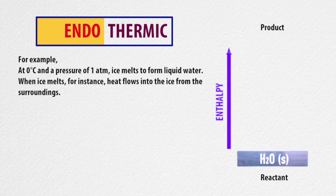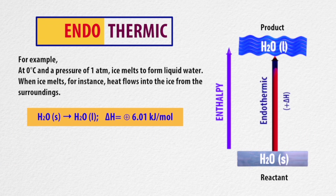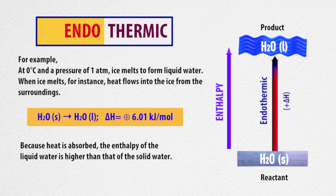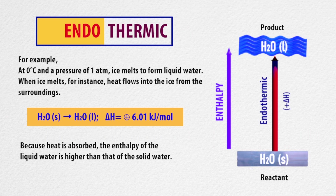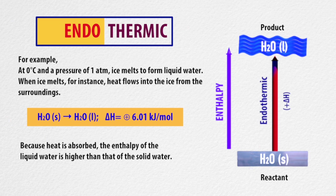For example, at 0 degrees Celsius and a pressure of 1 atm, ice melts to form liquid water. When ice melts, heat flows into the ice from the surroundings. Because heat is absorbed, the enthalpy of the liquid water is higher than that of the solid water.